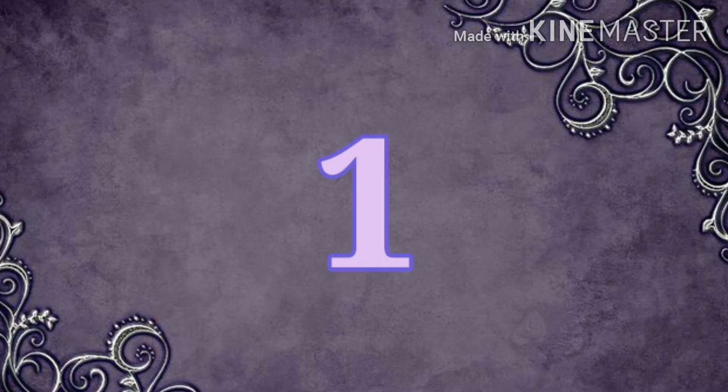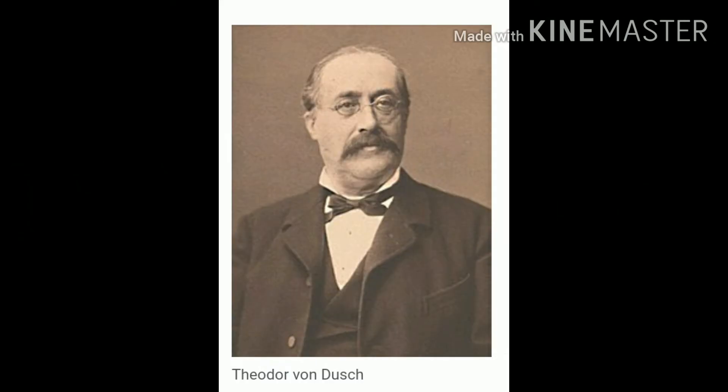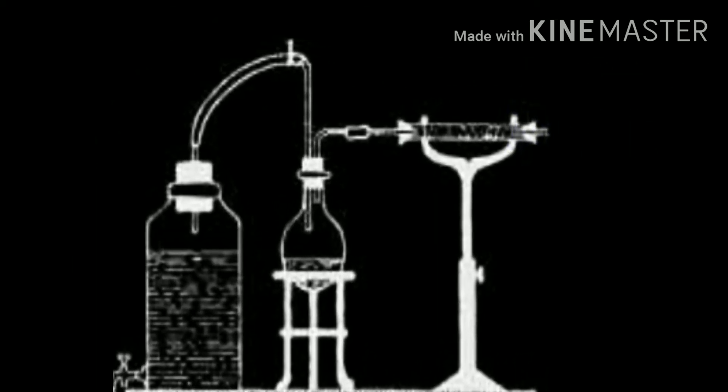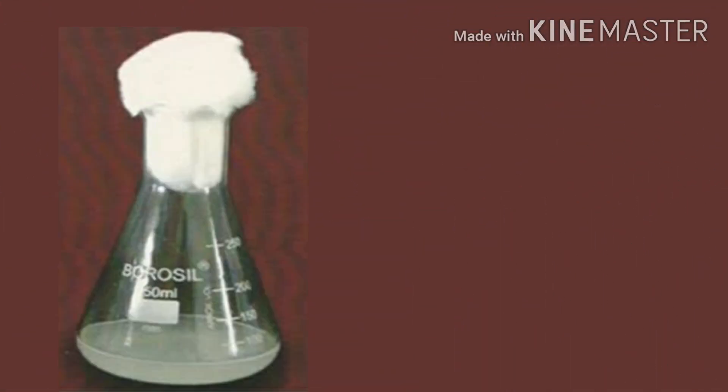About 1850, H. Schroeder and Theodor von Dusch performed a more convincing experiment by passing air through cotton into flasks containing heated broth. Thus the microbes were filtered out of the air by the cotton fibers so that growth did not occur, and a basic technique of plugging bacterial culture tubes with cotton stoppers was initiated.